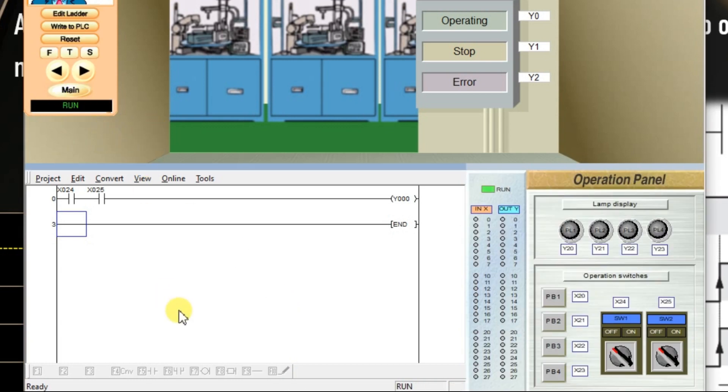We have already discussed the output will be turned on when both inputs are turned on. Otherwise if both inputs are off or any one of the input is off, the output is off. So we will test one by one. One of the input is activated x24. See blue color. It shows blue color means on. So one input is 1, second input is 0. Output is 0.